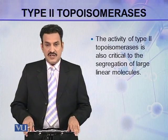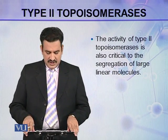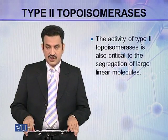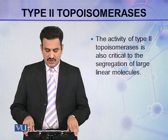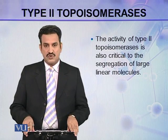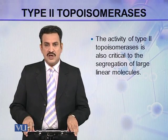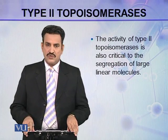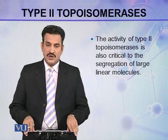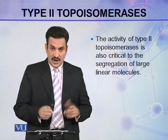The activity of type 2 topoisomerases is also critical to the segregation of large linear molecules. So type 2 topoisomerases are not only important for circular chromosomes — they are also important for linear chromosomes. How?